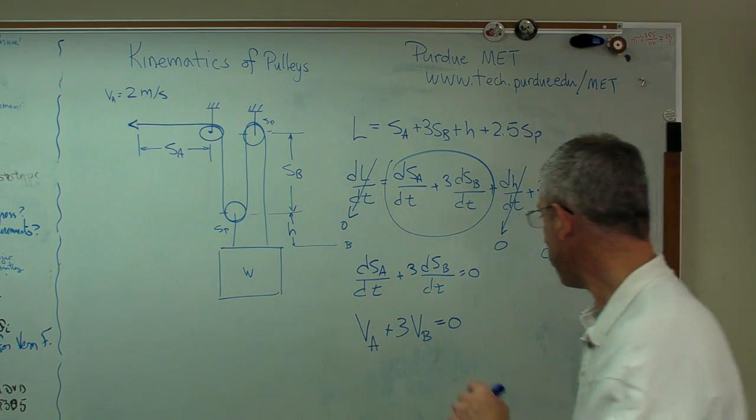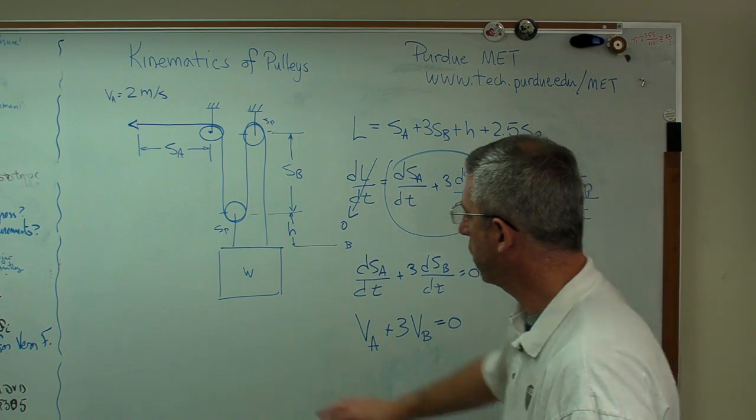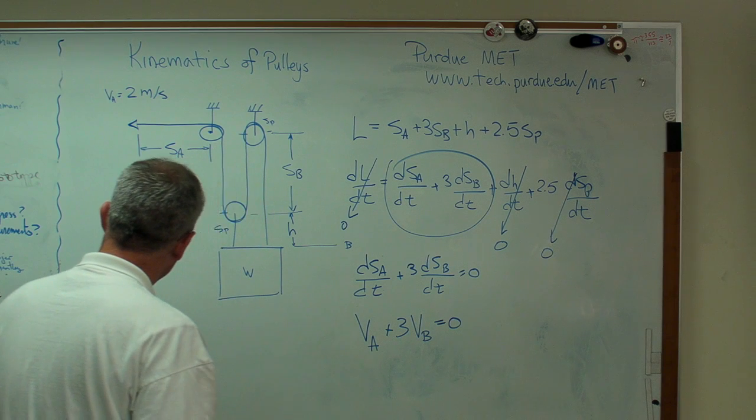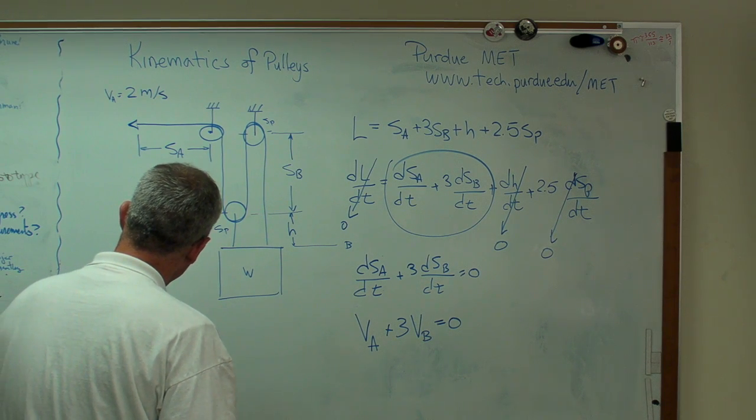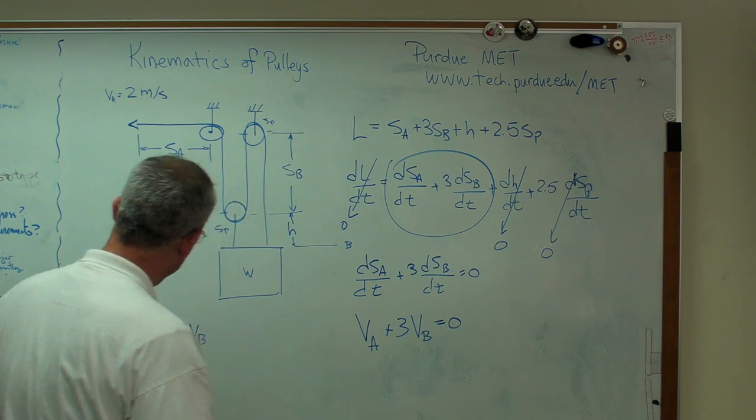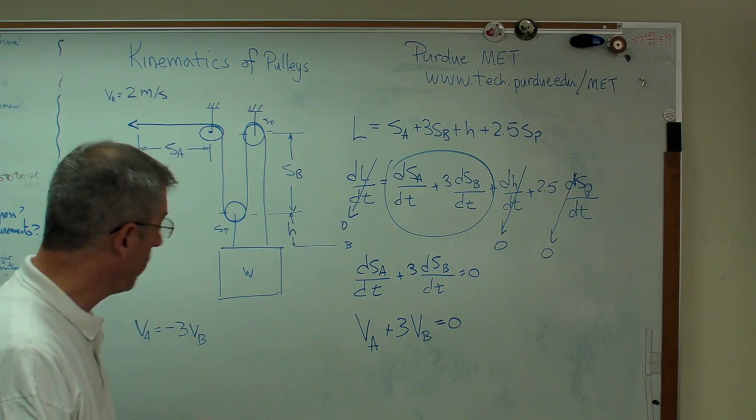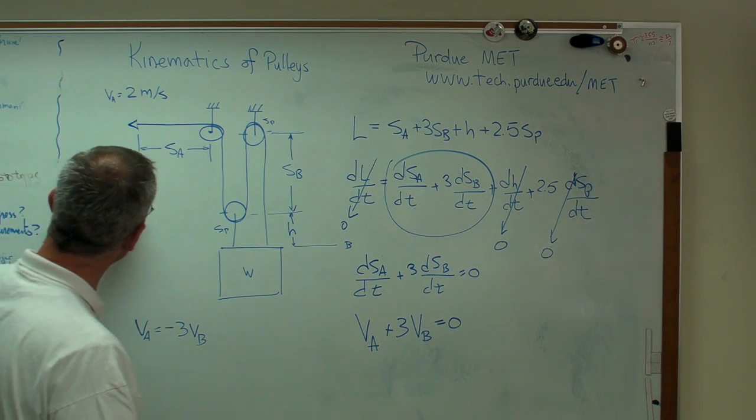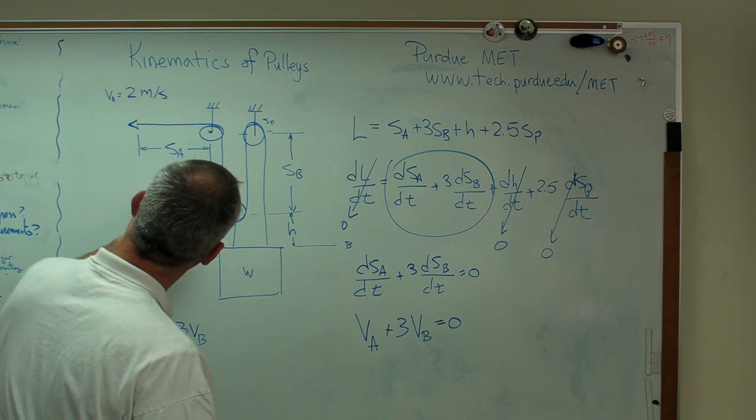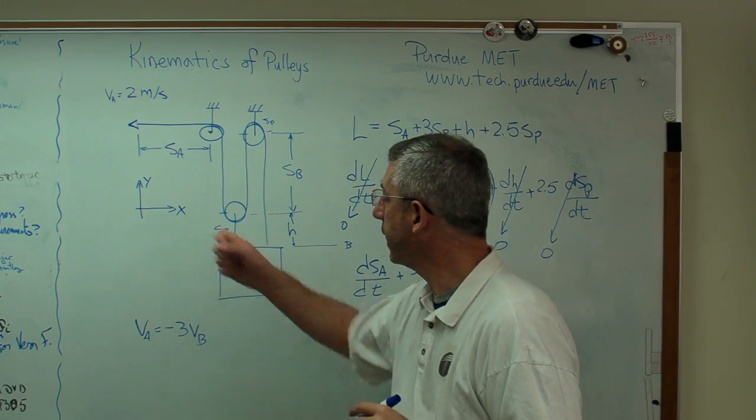So no problem. Now, I'm running out of room here. Let's go over here. VA equals minus 3 VB. All I did was push that over to the other side. Now, the last thing I've got is this minus sign here. Now, implicitly, I've assumed that's my coordinate system.